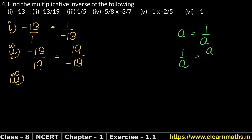Multiplicative inverse means 1 upon 5. So what does it mean? 5 will go up to the denominator because it is in the numerator, and 1 is in the denominator. We can also write it as just 5. Both values are correct.